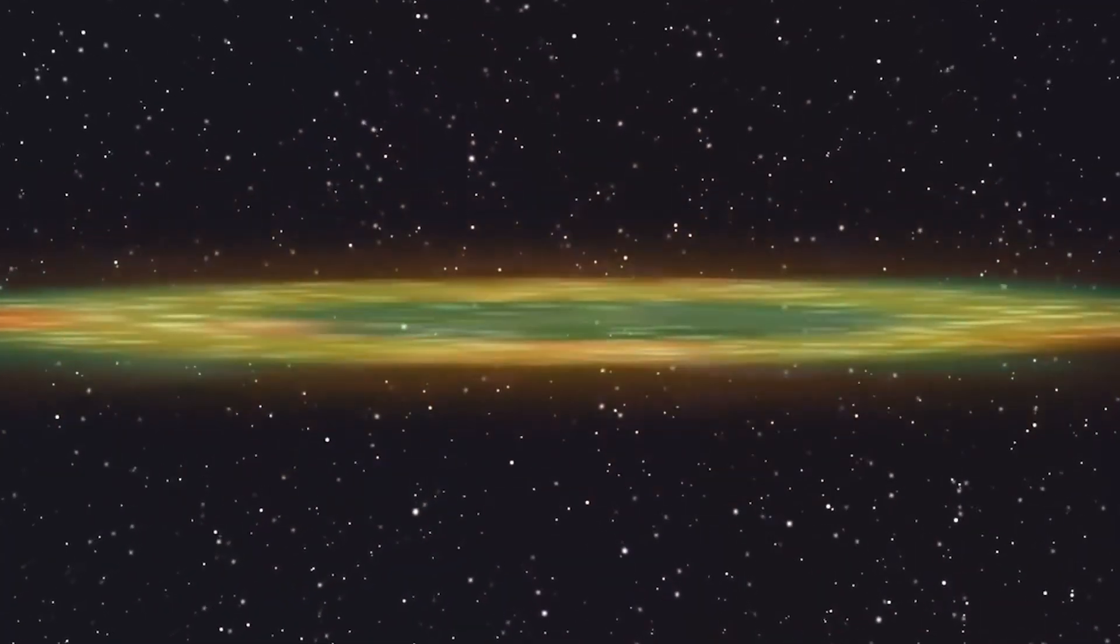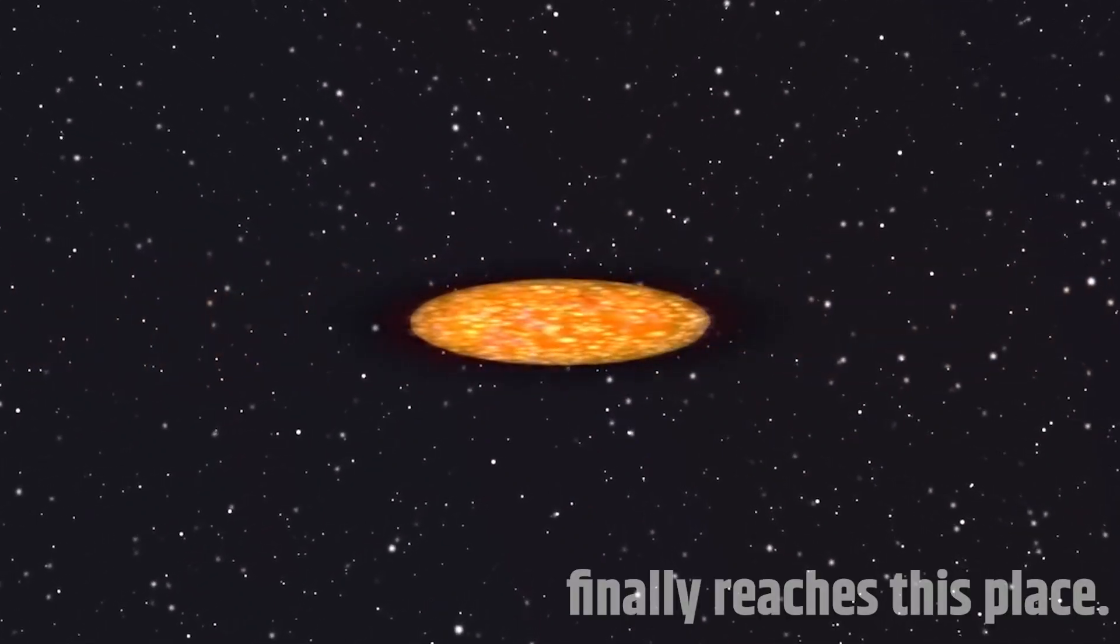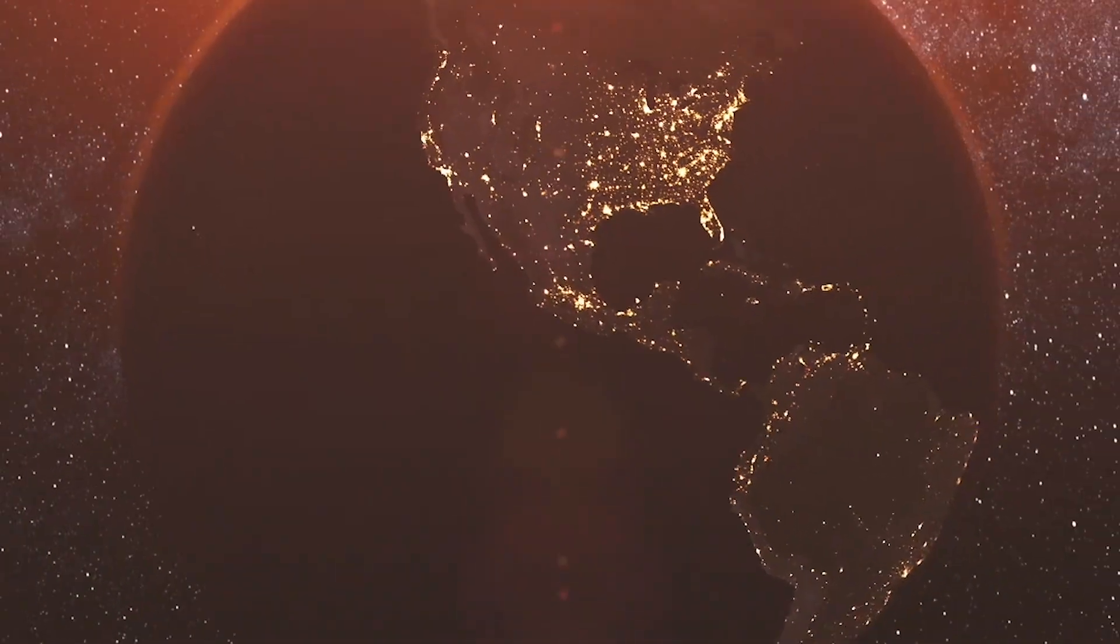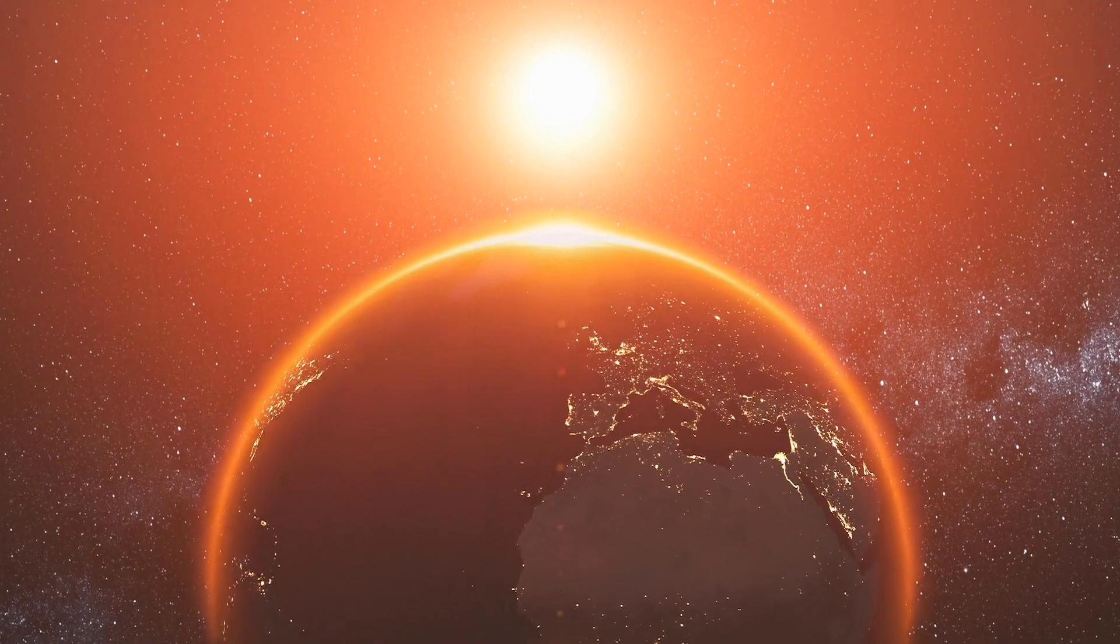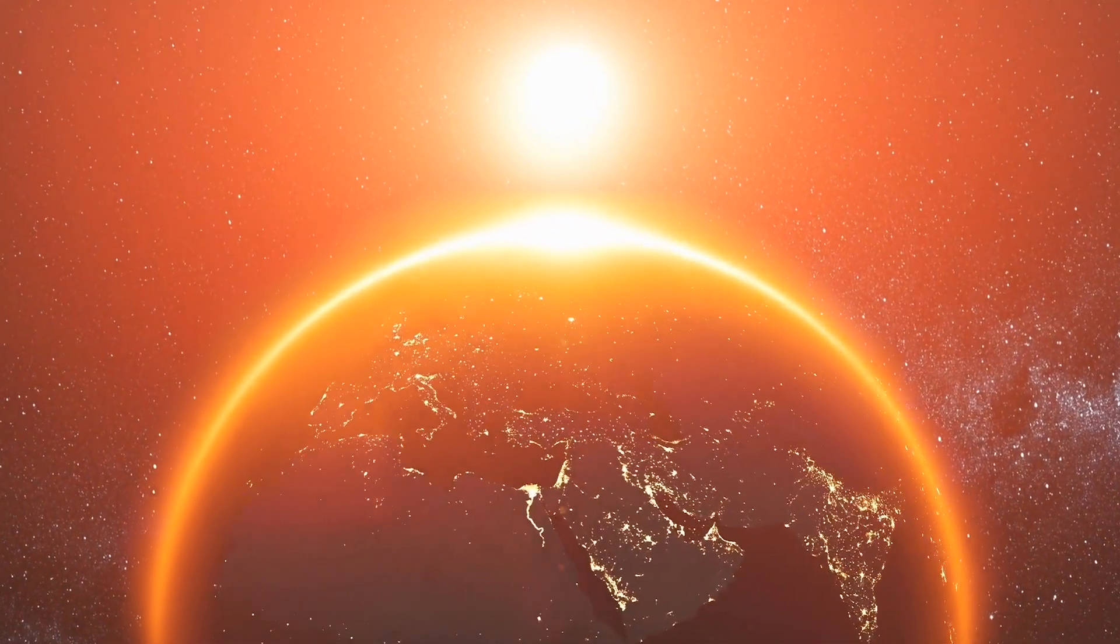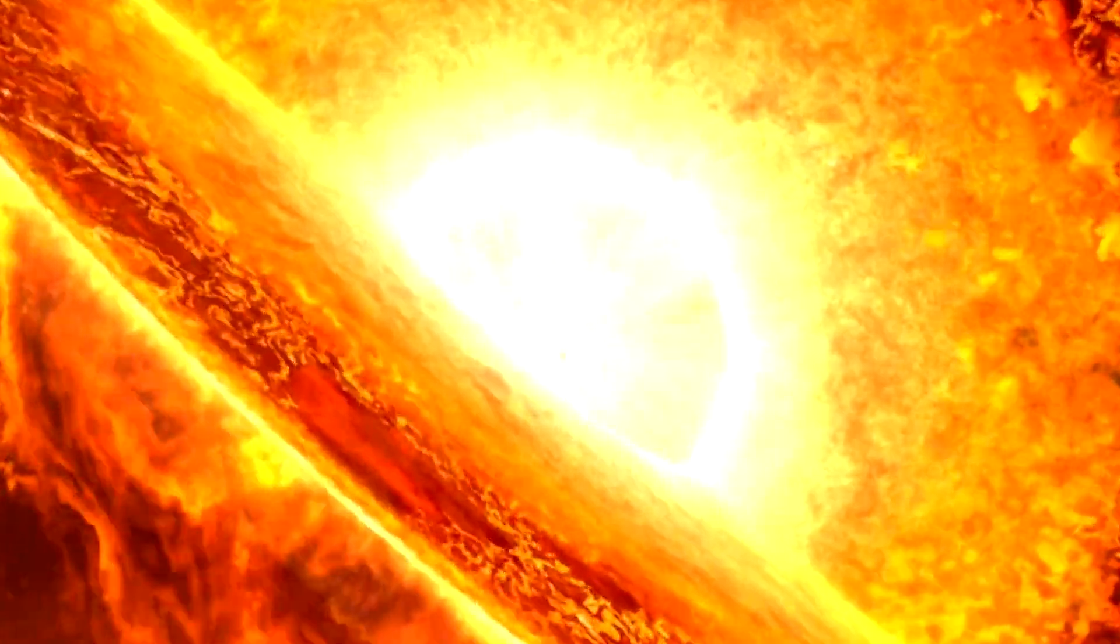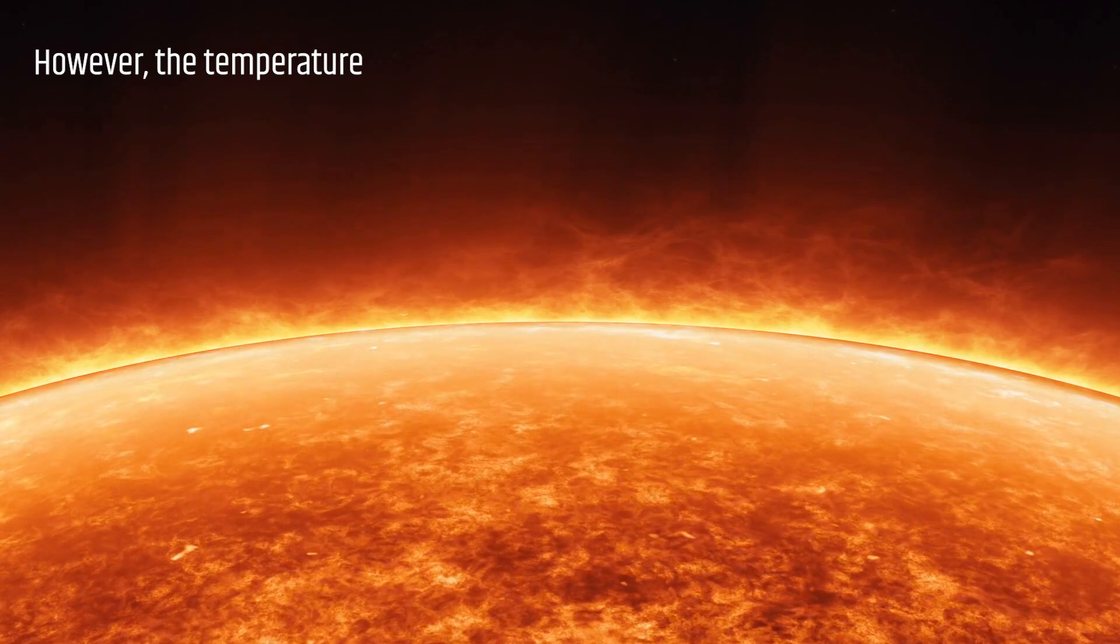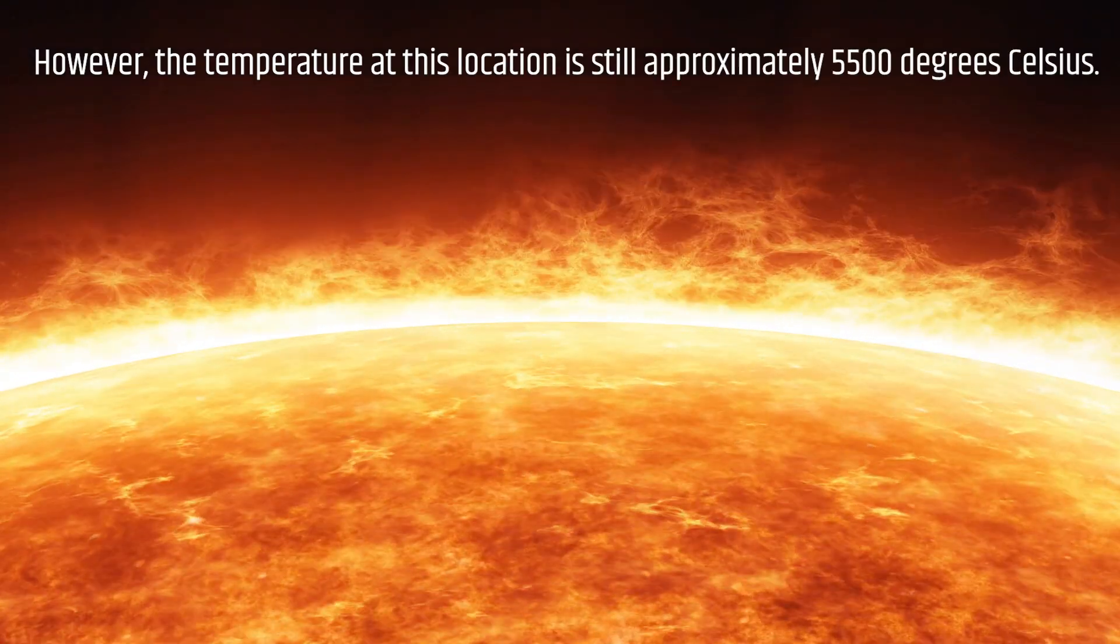The majority of the sun's energy, created in its core millions of years ago, finally reaches this place. About 8 minutes and 20 seconds later, it arrives at our location in the form of sunlight. We'd like to mention that the photosphere is much cooler than the interior areas of the sun. However, the temperature at this location is still approximately 5,500 degrees Celsius.